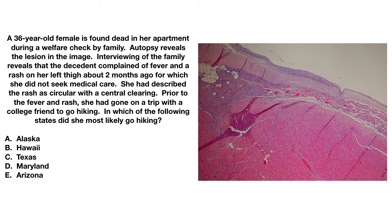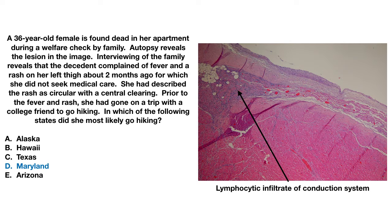The second question is tougher and more related to the United States. The image on the right shows the distribution of the AV node — that is AV node conduction tissue with prominent lymphocytic infiltrate visible as little blue dots. The rash described is erythema migrans, characteristic of Lyme disease. The main geographic epicenter in the United States is the mid-Atlantic and New England states, so Maryland is the best answer.